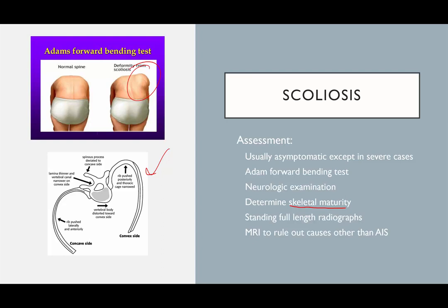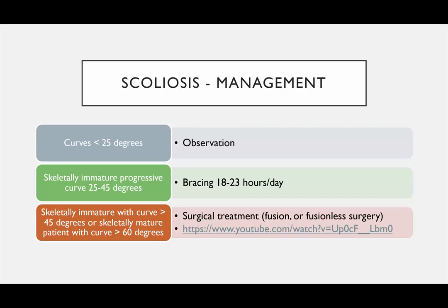Somebody who has nearly reached skeletal maturity will probably not worsen as much. Skeletal maturity always factors into treatment decisions and can make the difference between needing surgery or not. Curves less than 25 degrees are usually observed. Skeletally immature patients with progressive curves of 25 to 45 degrees are often braced nearly 24 hours a day. Skeletally immature patients with curves over 45 degrees, or skeletally mature patients with very large curves, typically need surgical fusion. These patients can face back pain and respiratory problems if left untreated.